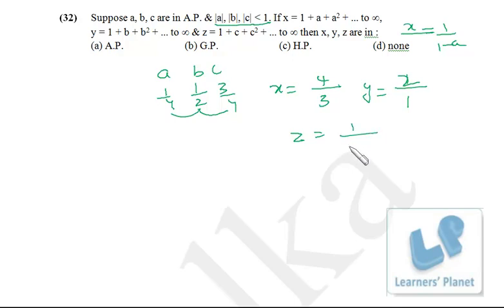Z is equal to 1 upon 1-c. So 1 upon 1 minus 3 by 4. So it's 1 by 4. So z is equal to 4. Now we got the value of x, y, z. Now we have to find out whether x, y, z are in AP, GP or HP.